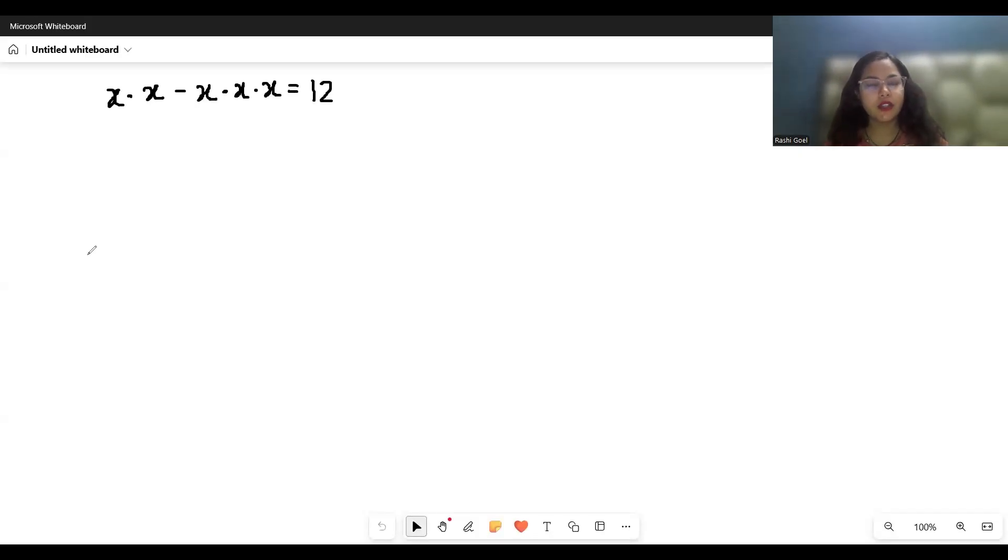Can you solve this quickly? x times x minus x times x times x equals 12. Most people get stuck, but there is a simple trick. First, rewrite x times x as x squared, and this becomes x cubed.